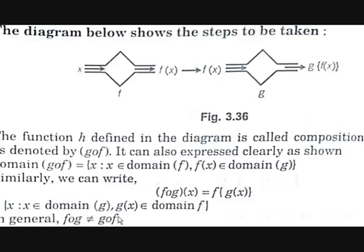For example, if we take f of x as x plus 1 and g of x as x squared, then f∘g will give x squared plus 1, but g∘f will give (x plus 1) squared. So those two are two different functions.